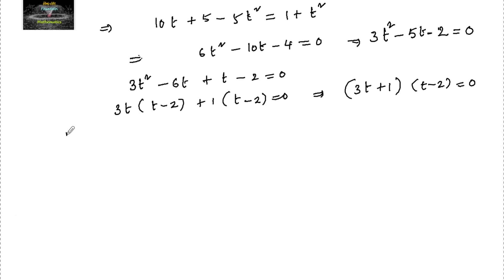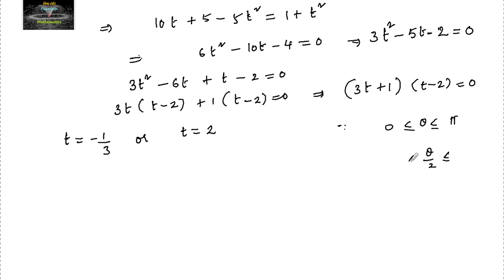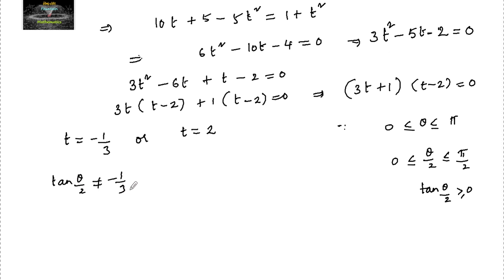So t = −1/3 or t = 2. Since θ lies between 0 and π, θ/2 lies between 0 and π/2, meaning tan(θ/2) must be positive. Therefore t = −1/3 is rejected, and we take tan(θ/2) = 2.